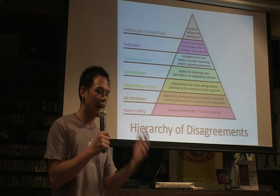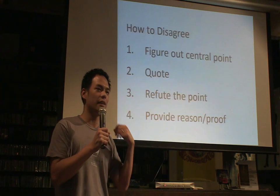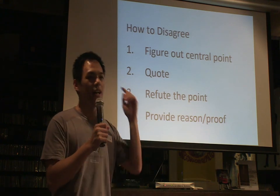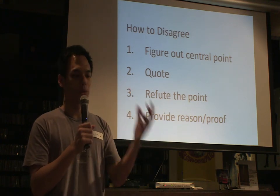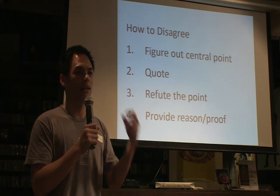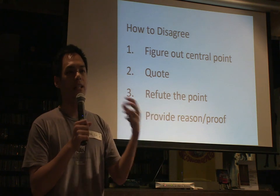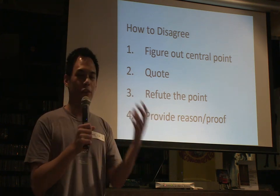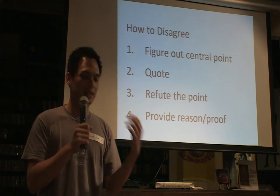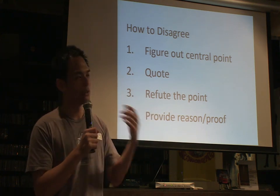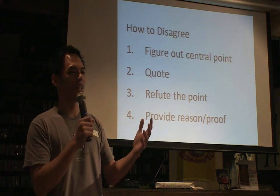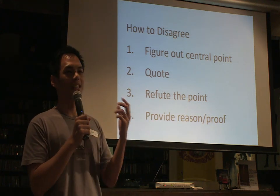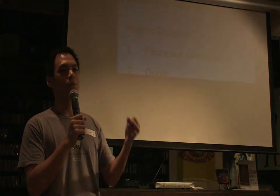Just a recap on how to disagree: A — figure out what the central point is. B — call the person if you need to. C — review the point. And D — provide your reason and proof. Together, let's learn how to disagree and make this world a better place. Thank you.